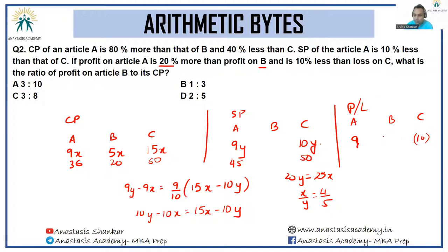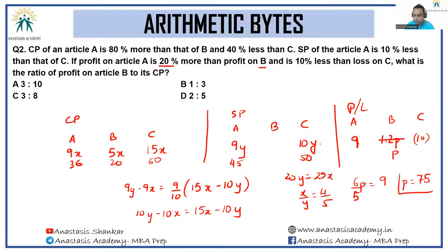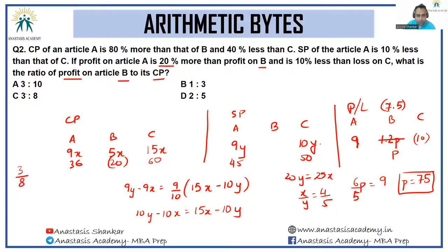Since profit on A is 20 percent more than profit on B: (6/5) × p = 9, so p = 7.5. The profit for B is 7.5 rupees. The ratio of profit on article B to its CP is 7.5 to 20, which equals 3 by 8. Therefore the answer is option C.